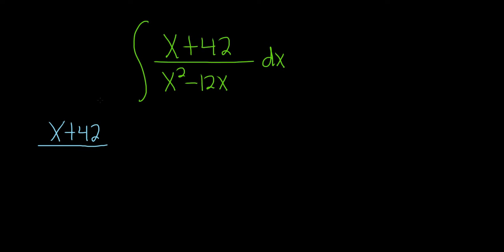You'll notice that in the denominator, we can pull out an x. So this is x, parentheses, and then x minus 12, parentheses.